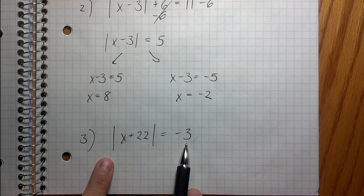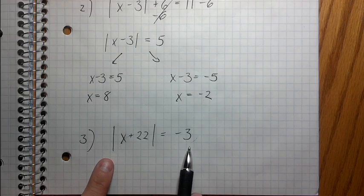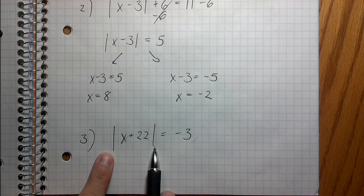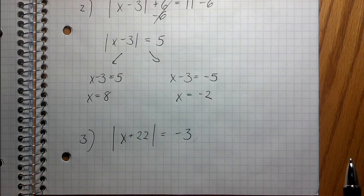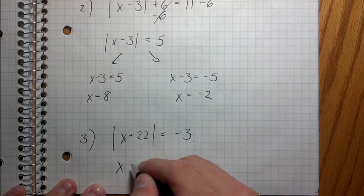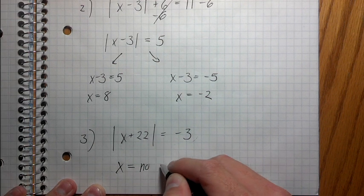So yeah, essentially what you're trying to do is you're just looking at this, and anytime you see a negative answer, and you have an absolute value, you don't even have to go anywhere. You're done. Basically, you're completely finished at that point. So this is x equals no solution.